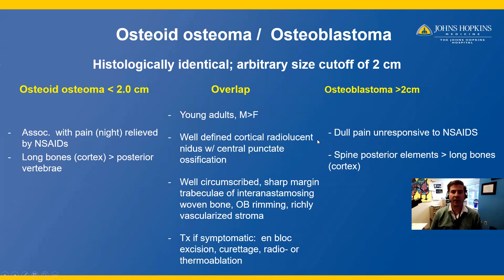Both osteoid osteomas and osteoblastomas have overlapping features. They typically arise in younger patients, more commonly in males. Radiographically, we will typically see a well-defined cortical radiolucency with a central punctate nidus of ossification. Histologically, it is a well-circumscribed mass with a sharp margin, composed of trabeculae of inner anastomosing woven bone with osteoblastic rimming and a background richly vascularized stroma.